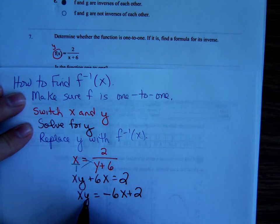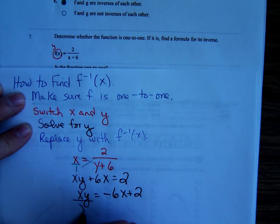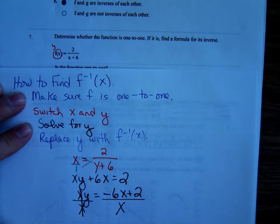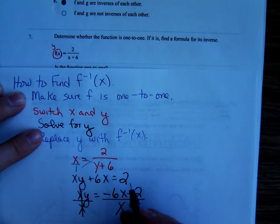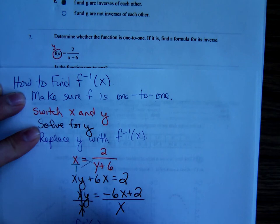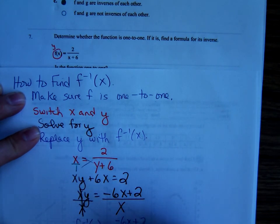Negative 6x plus 2 or 2 minus 6x. And then, the last thing I would do to get the y by itself, what would I need to do to get rid of this x? Yes, divide both sides by x. Now, once you have the y completely by itself, you're finished. Replace the y with f inverse. And we have negative 6x plus 2 all over x.